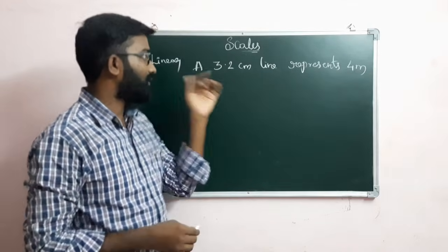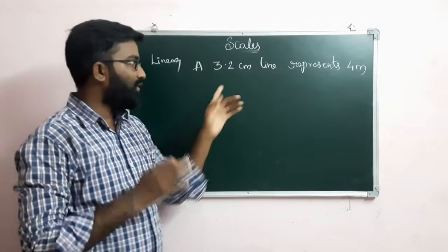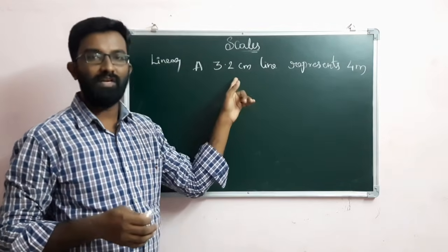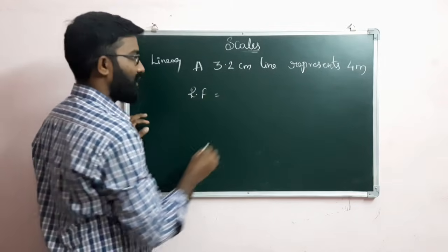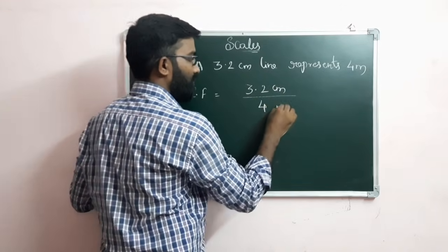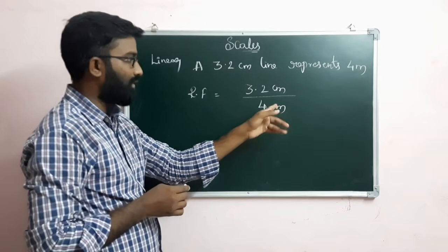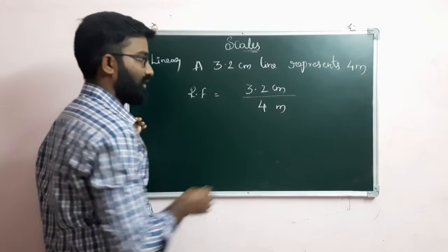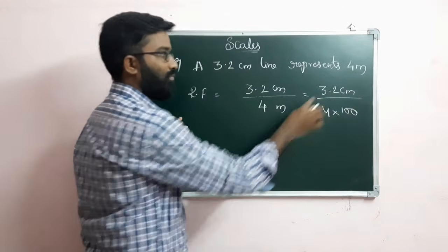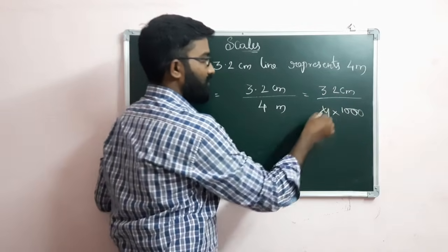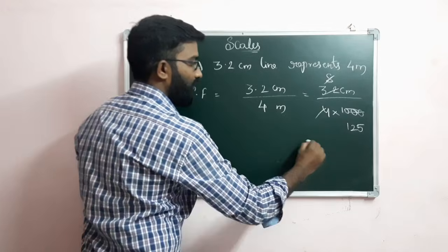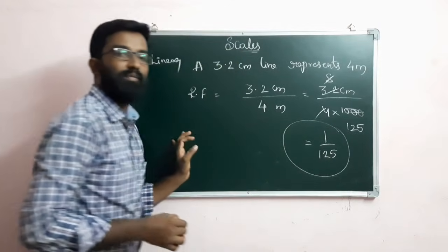Let us look at the representative fraction. A 3.2 cm line represents 4 meters. The original length is 4 meters. So RF equals dimension of diagram divided by original dimension, which is 3.2 cm divided by 4 meters. Convert 4 meters to centimeters: 4 meters equals 400 cm. So RF equals 3.2 divided by 400, which simplifies to 1 by 125. This is the representative fraction.